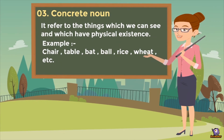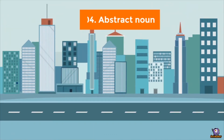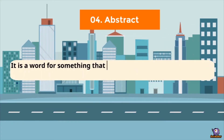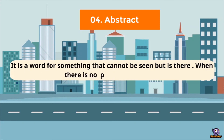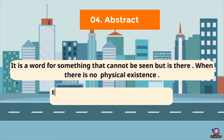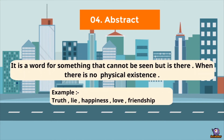Then we have abstract noun. Abstract noun is a word for something that cannot be seen, but it is there — when there is no physical existence. Abstract noun ki koi physical existence nahi hoti, but we can feel that it is there in the environment. Examples can be truth — hum jaante hain ki sacchai hoti hai par hum choo nahi sakte. Lie, happiness, love, friendship — we can feel all these emotions but we cannot touch them.